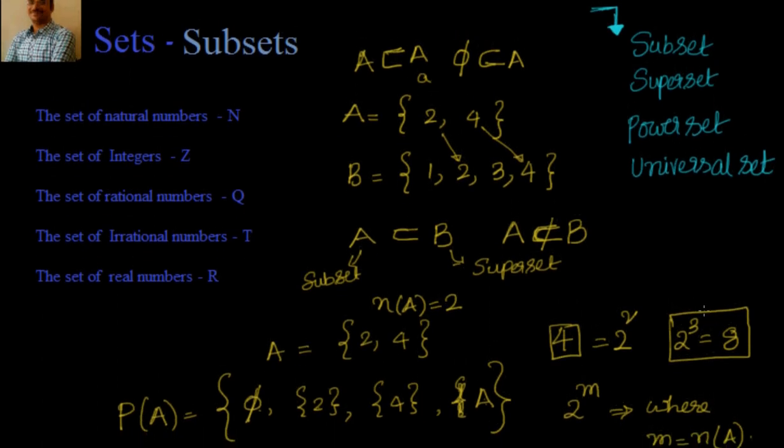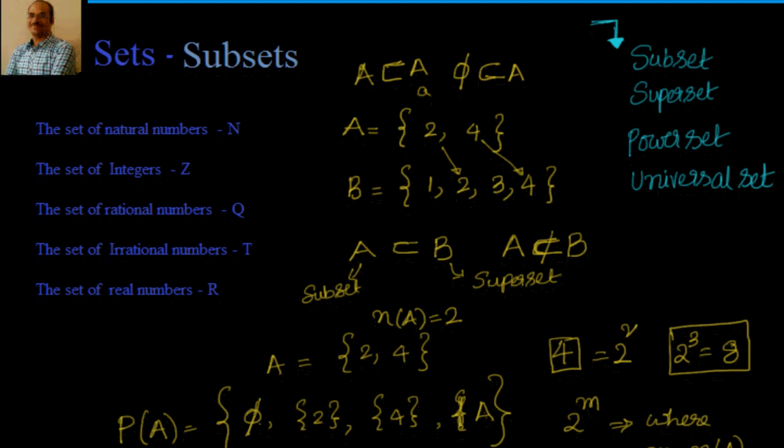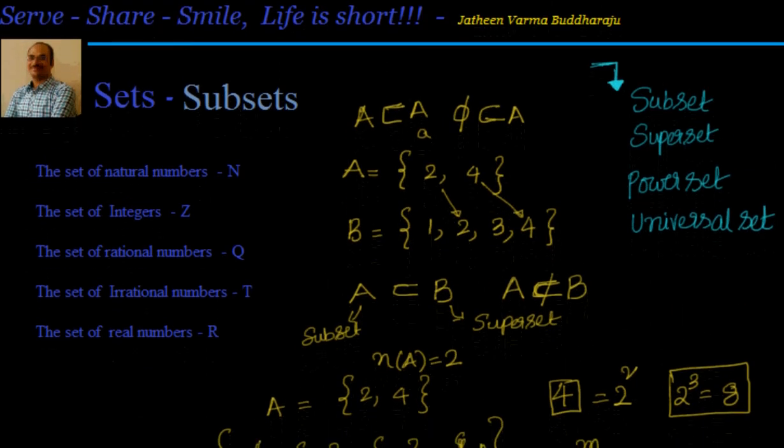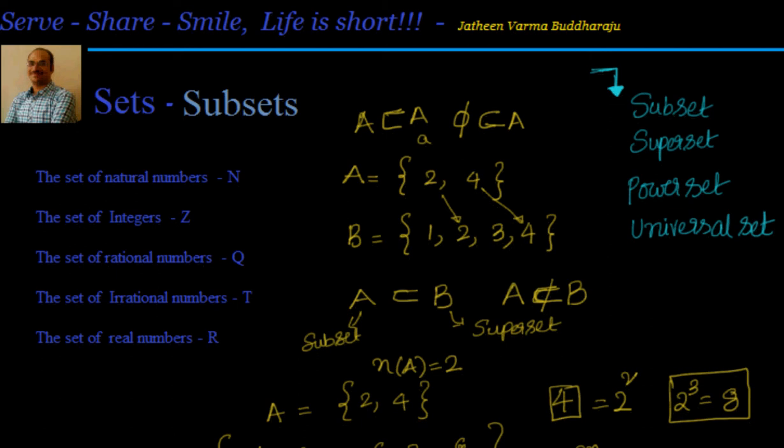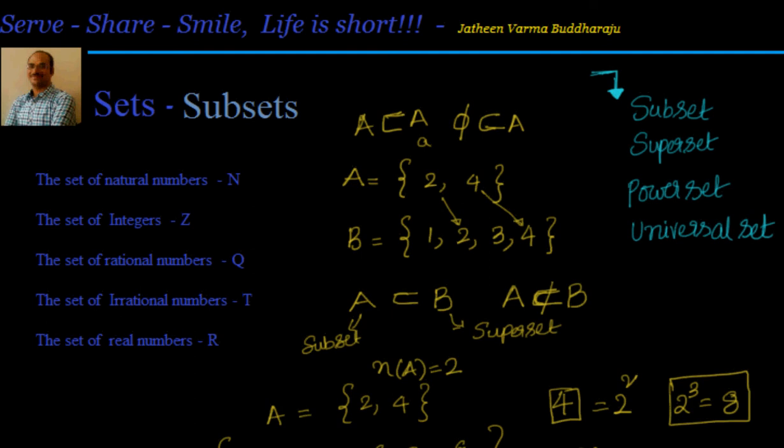Now what is universal set? A set is called a universal set if it is a superset to more than one sets. It's context sensitive. Suppose you are talking about musicians of a particular state. Then you can say that the universal set can be musicians present in India or US or Canada, a particular country, or you can say musicians present worldwide.